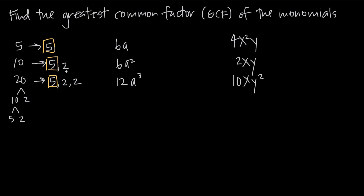If we look at this next factor of two, we can see that we have this factor of two involved in the breakdown for ten and also a factor of two involved in the breakdown for twenty. But we don't have a factor of two involved in the breakdown for five, so we can't include it in our greatest common factor. Nor can we include this second two involved in twenty, because again we don't have a factor of two in our breakdown for five. That means the only thing we can include is five, so the greatest common factor for 5, 10, and 20 is five.